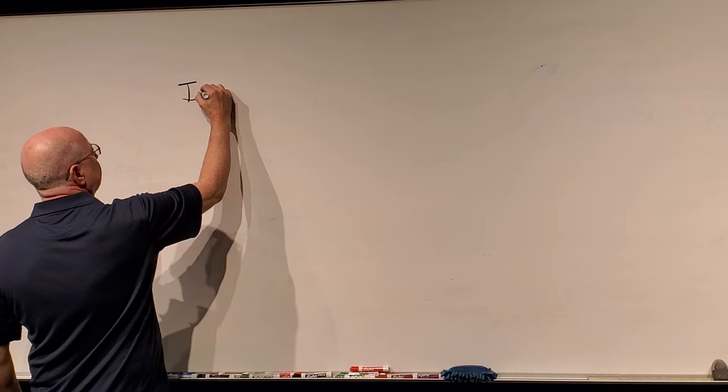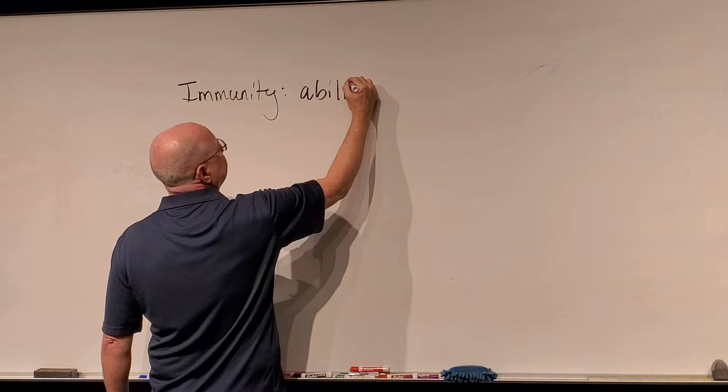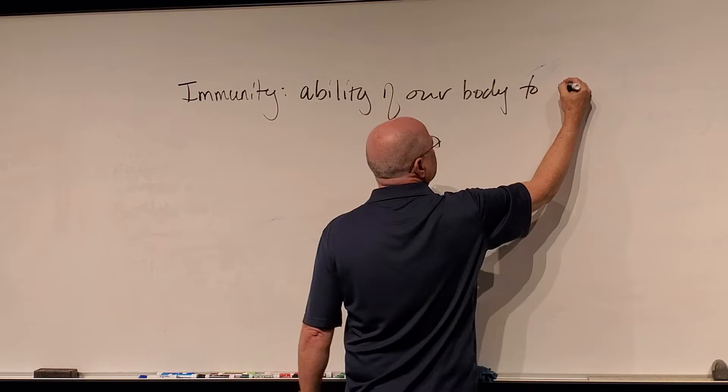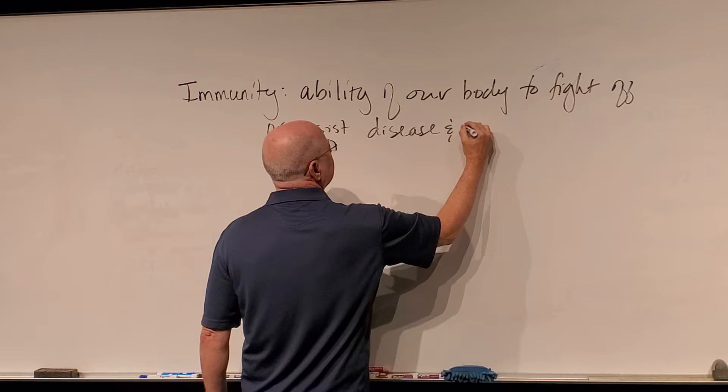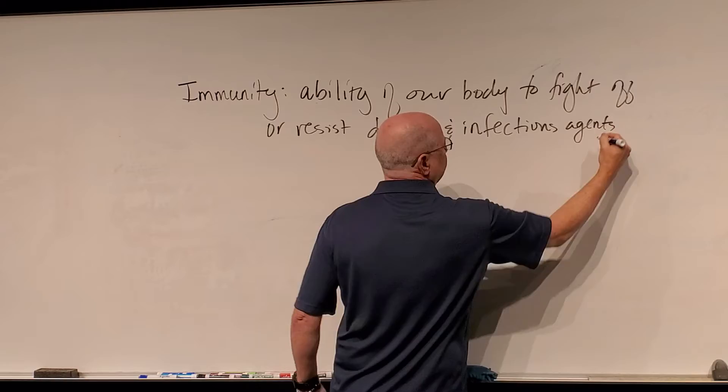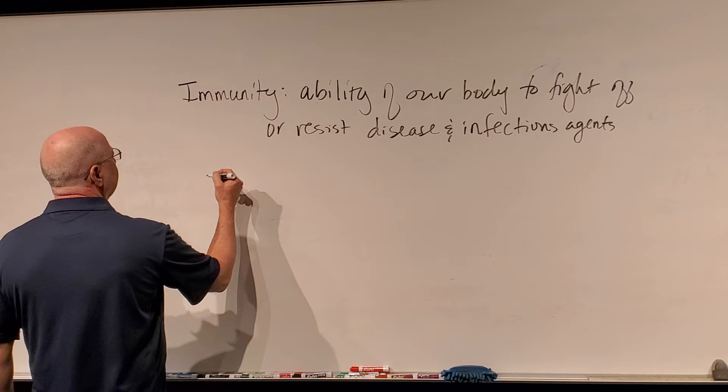The opposite of immunity is susceptibility. Immunity is our body's ability to fight off or resist disease and infectious agents — that could be pathogens, that could be exotoxins, anything trying to cause an infection or make us sick. The opposite of immunity is susceptibility.